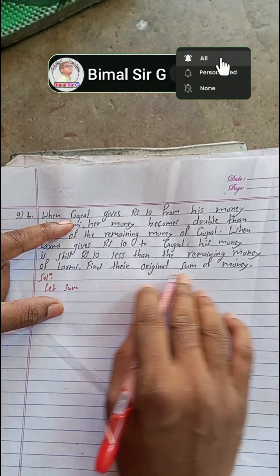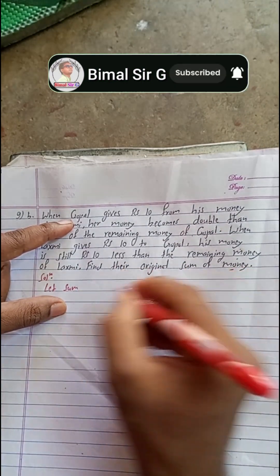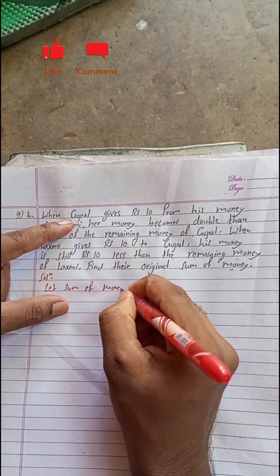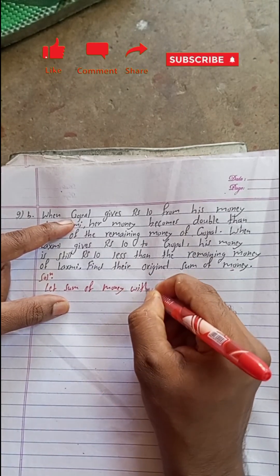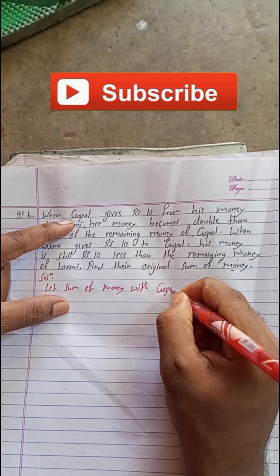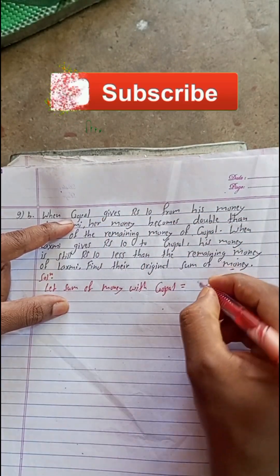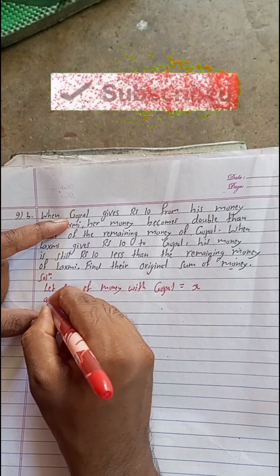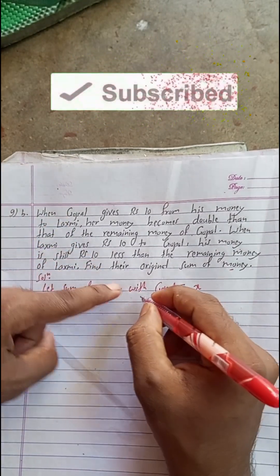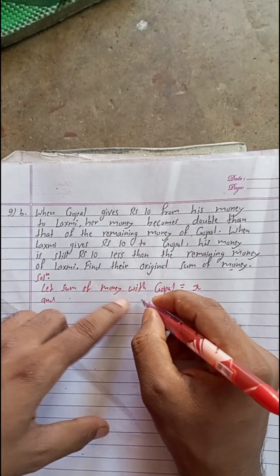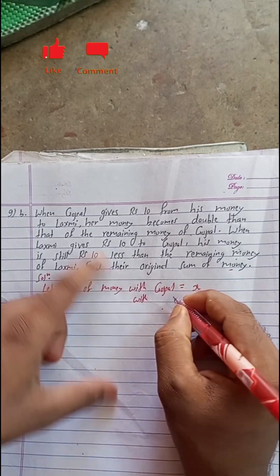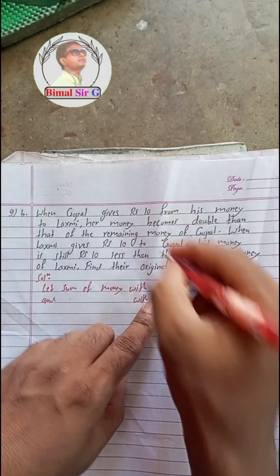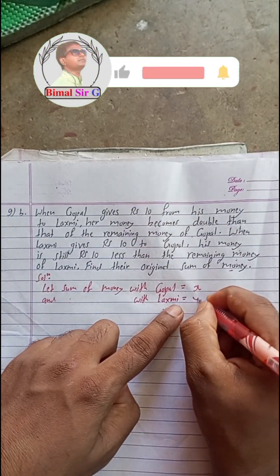Find their original sum of money. Solution: Let the sum of money with Gopal be equal to x, and the sum of money with Laxmi be equal to y.